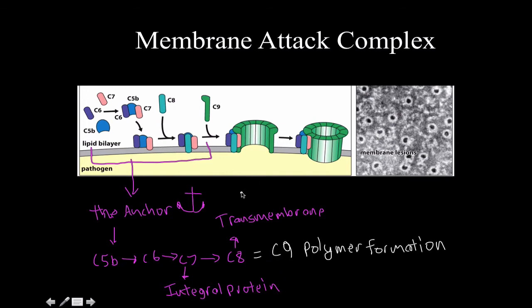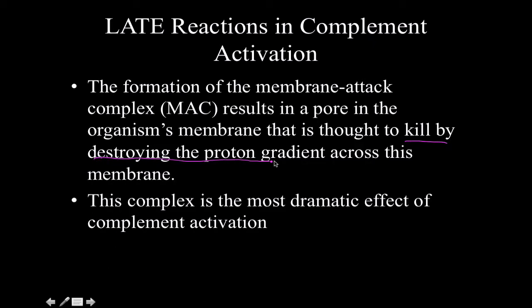It's not so much an enzymatic reaction as a long series of conformational changes where C9 binds repeatedly and ultimately forms a nice circular pore — visible as lesions on the membrane in an electron micrograph. This works great for pathogens that have a membrane, but if they're surrounded by a shield of peptidoglycan, it's less effective. The MAC kills by destroying the proton gradient across the membrane, eliminating the pathogen's ability to undergo ATP synthesis — essentially lysing the cell by poking a hole in it.